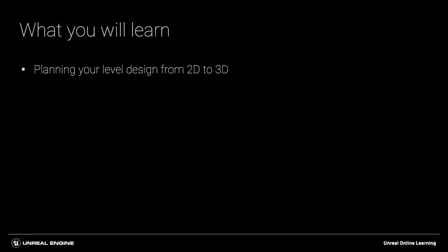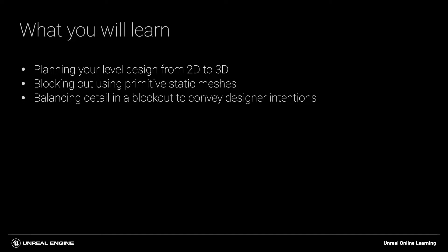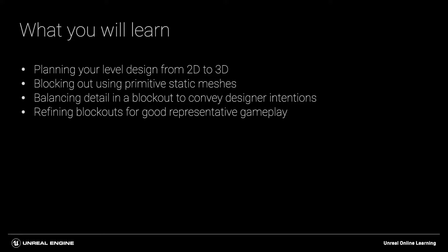In this course, you will learn how to plan your level design from 2D to 3D in a level design document. We'll also learn how to block out using primitive shape static meshes, and we'll look at balancing detail in a block out to convey designer intentions. And finally, we'll look at ways of refining the block out for good representative gameplay.